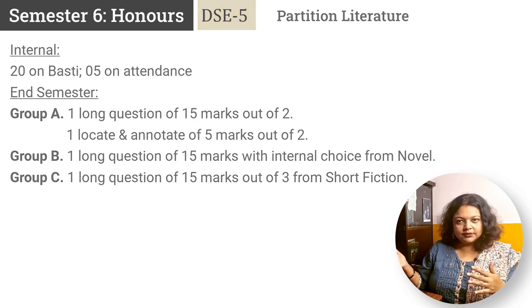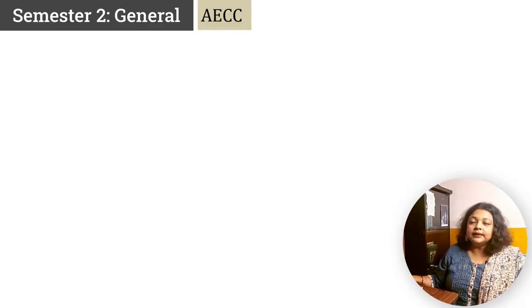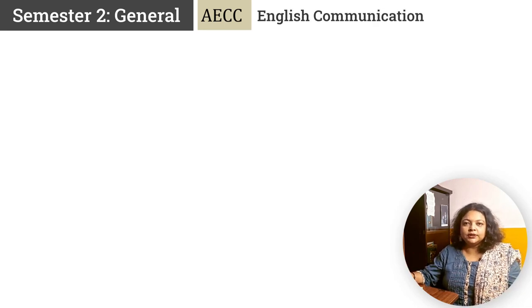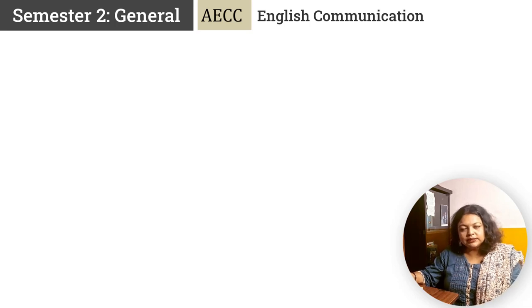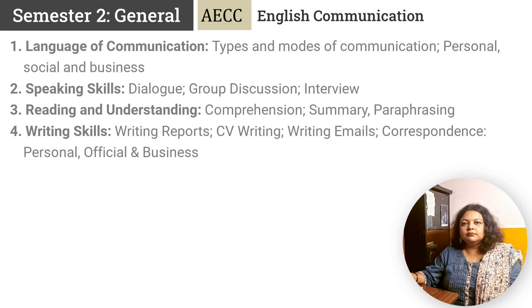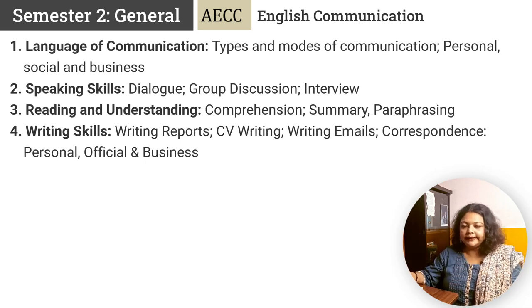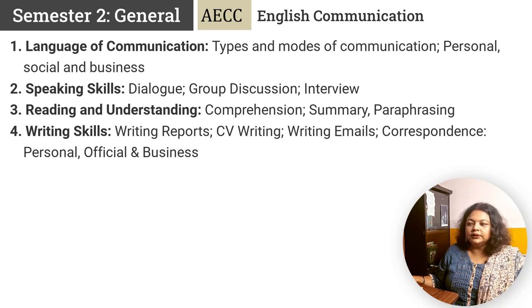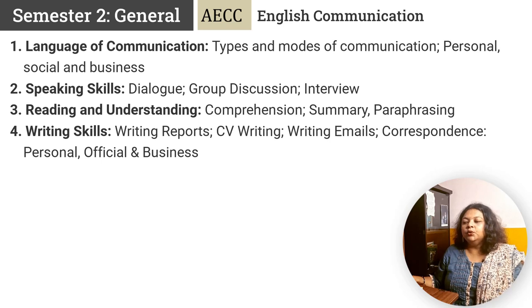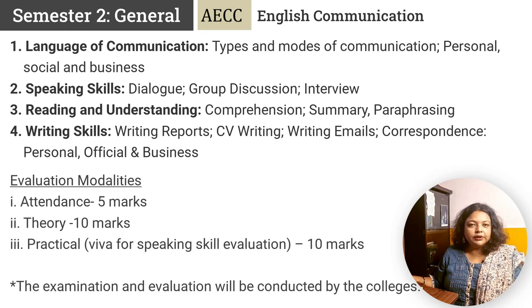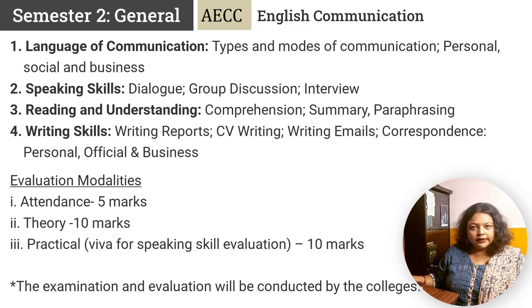Now we move to the general syllabus. First, AECC English Communications, offered to both semester 2 honours and semester 2 general students. It is a 25-mark course evaluated internally, covering language of communication, speaking skills, reading, writing, CV writing, and writing emails. Evaluation includes theory for 10 marks and practical Viva for speaking skill for 10 marks — conducted entirely by colleges.